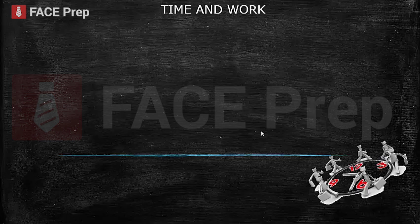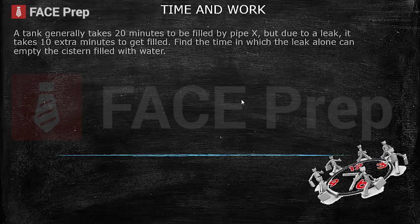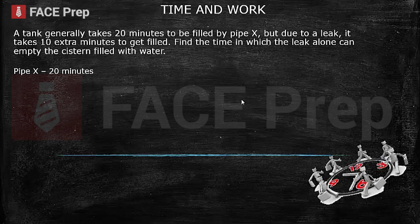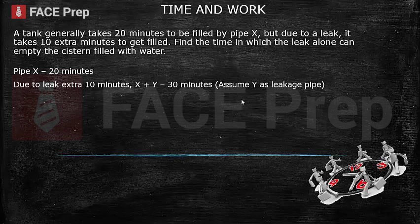Questions from pipes and cisterns can also be solved using the chocolate method. The only difference is that we assume the total capacity of the cistern as the LCM of the time mentioned. Let's look at an example. A tank generally takes 20 minutes to be filled by pipe X, but due to a leak it takes 10 extra minutes to get filled. We assume a leakage pipe Y, so pipe X plus pipe Y together takes 30 minutes.